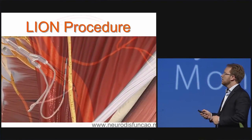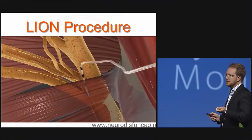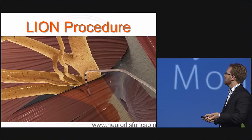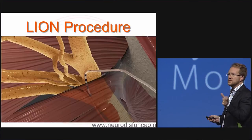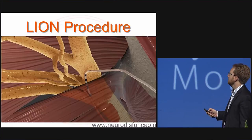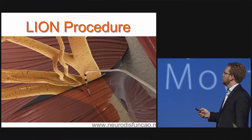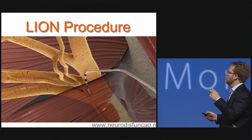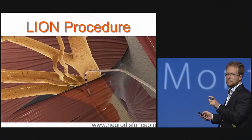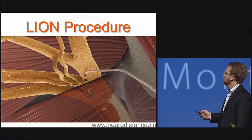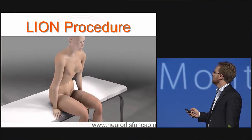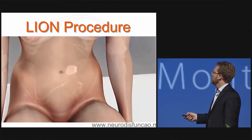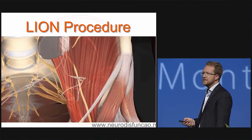With pudendal nerve stimulation, we can induce a sphincteric contraction, useful for stimulation or neuromodulation, which increases bladder capacity by about 50%. In men, we can also induce erection — usually with high-frequency bursts or low-frequency continuous stimulation. We can also perform direct stimulation of the femoral nerve. This is a C5-C6 patient using his remote control to exercise his quadriceps.